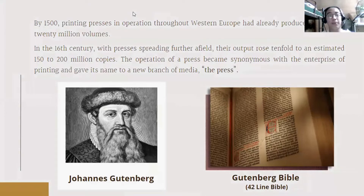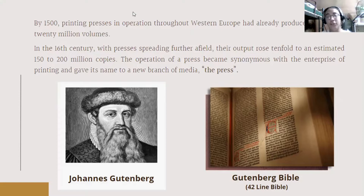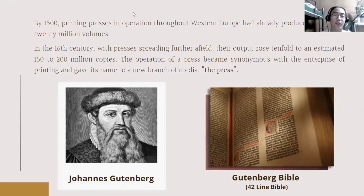By the 1500s, printing presses in operation throughout Western Europe had already produced more than 20 million copies. In the 16th century, with presses spreading further afield, their output grew tenfold to an estimated 150 to 200 million copies. The operation of a press became synonymous with the enterprise of printing, giving its name to a new branch of media called the press. In addition, you can see Gutenberg's Bible, also known as the 42-line Bible, which has its name derived from Johannes Gutenberg himself, as well as the format that the print follows, containing two columns with 42 lines each.